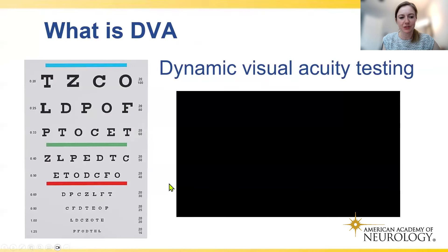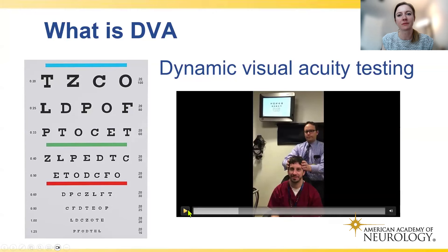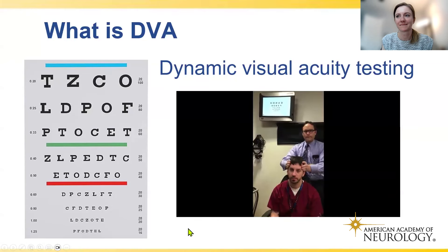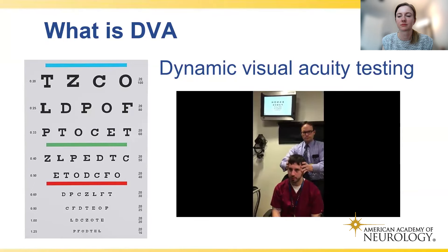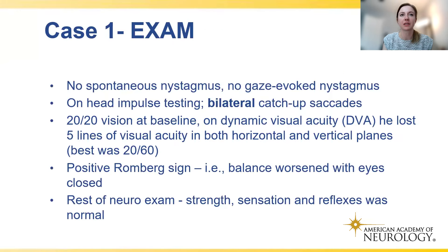Dynamic visual acuity testing is demonstrated here. First the patient reads the Snellen chart normally. Then the examiner shakes the patient's head while the patient reads the chart again. Normal people should not lose more than two lines of vision during this maneuver. This patient lost five lines of vision, consistent with impaired vestibulo-ocular reflex function.